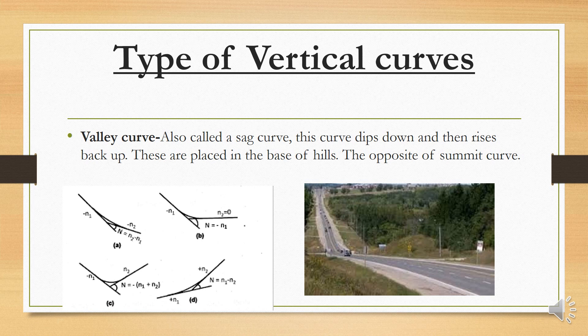There are two types of vertical curves: the first one is valley curve and the second one is summit curve. A valley curve, also called a sag curve, dips down and then comes back up. These are placed in valley areas. The vertical curve deals with the up-and-down profile of the road.